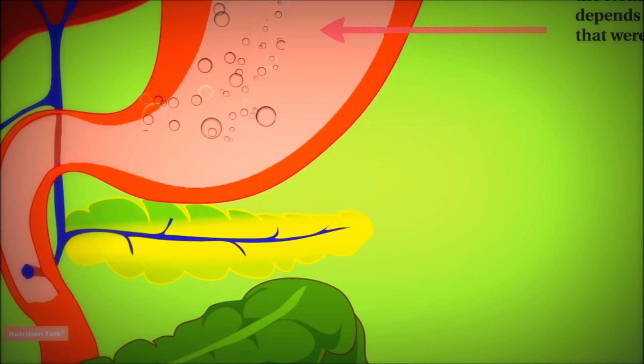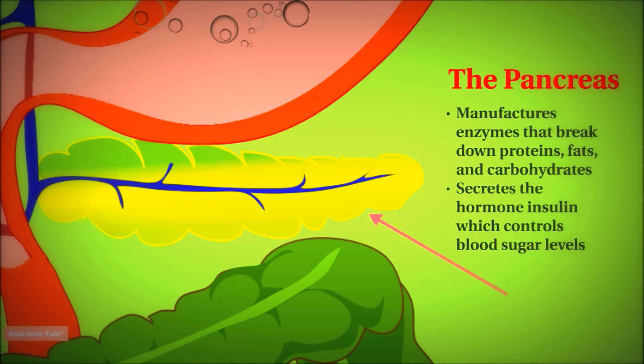Now right below the stomach is a very important organ called the pancreas. Now unlike other organs in the digestive system, nothing actually passes through the pancreas. And the job of the pancreas is to manufacture enzymes, and it manufactures three types of enzymes—ones that work on proteins, fats, and carbohydrates. So the pancreas is the only organ that is able to digest all three types of nutrients.